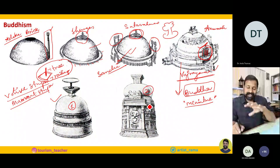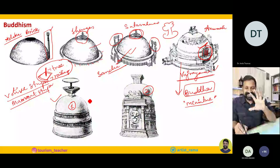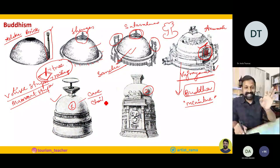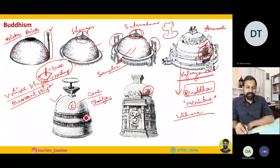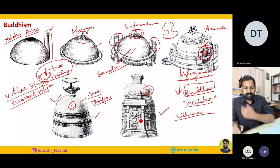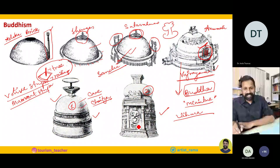Where are these stupas? If you visit Ajanta-Ellora Caves, you find these stupas inside the caves. Whichever cave has a stupa inside becomes a Chaitya. If the caves do not have stupas, then that is where monks used to stay — that is the Vihara. Now, out of these two, which one is Mahayana and which is Hinayana? If there are only icons and no human form of Buddha, it is Hinayana. If there is Buddha's form, it is Mahayana.